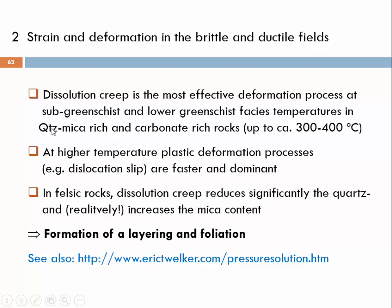In a mica-rich rock, maybe 150 degrees would be sufficient to have a fluid that can take up substantial SiO2 from quartz dissolution. When we go into the greenschist facies, above 300 to maybe 400 degrees, plastic deformation processes controlled by dislocation slip, dislocation climb, volume diffusion, or grain boundary diffusion creep become faster and more dominant. But at low temperatures — where most foliations form in micaceous quartz-rich rocks — dissolution creep is very, very important.